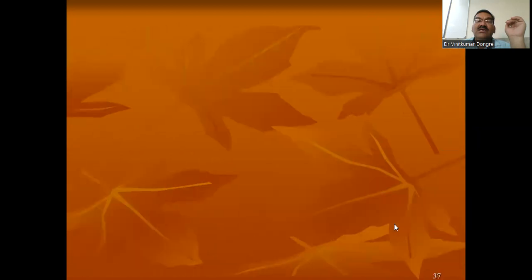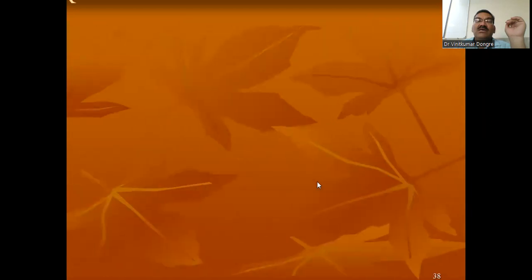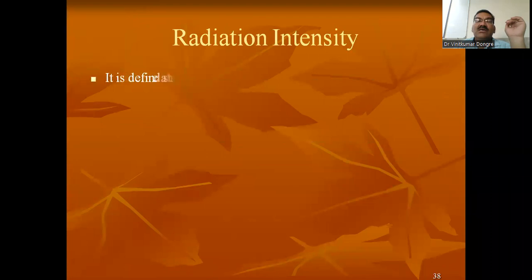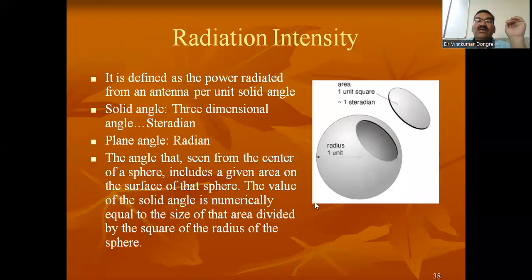Now we go for radiation intensity. Radiation intensity is not referred to the surface — it refers to the solid angle. A solid angle is like the angle of a cone. You might have seen an ice cream cone — that is a solid angle. Any cone, the angle of that is the solid angle.